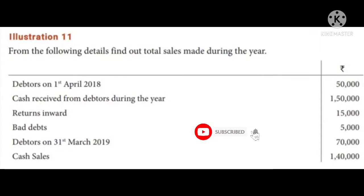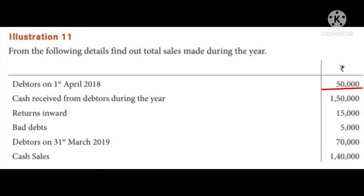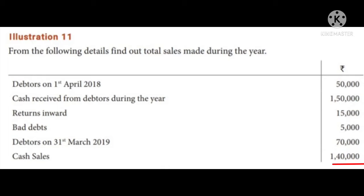Illustration 11: From the following details, find out total sales made during the year. Debtors on 1st April 2018: 50,000. Cash received from debtors during the year: 1,50,000. Returns inward: 15,000. Bad debts: 5,000. Debtors on 31st March 2019: 70,000. Cash sales: 1,40,000.